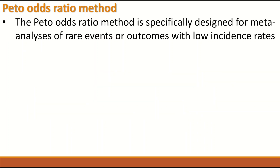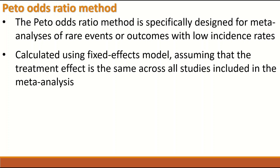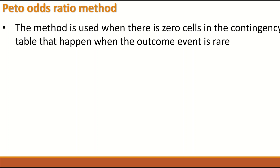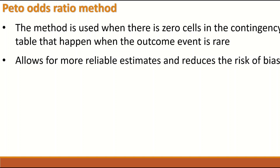The Peto odds ratio method is specifically designed for performing meta-analysis when the events are rare or the outcomes occur with a low incidence rate. It is calculated using the fixed effects model, assuming that the treatment effect is the same across all studies included in the meta-analysis. The method is used when there are zero cells in the contingency table, which happens when the outcome event is rare. The method also allows for more reliable estimates and reduces the risk of bias.